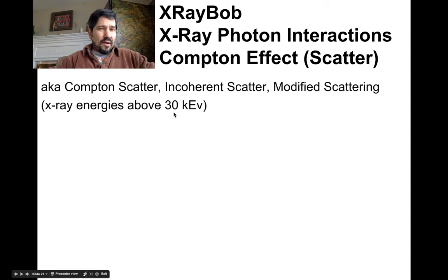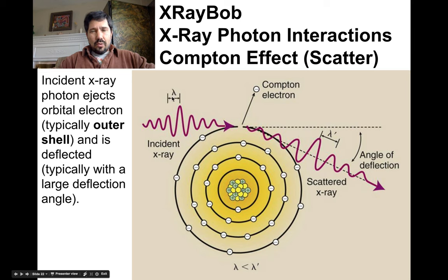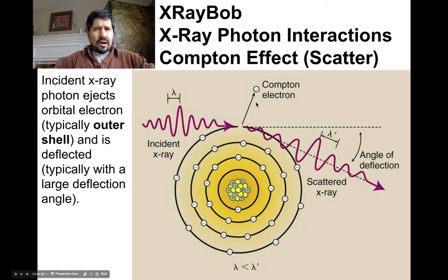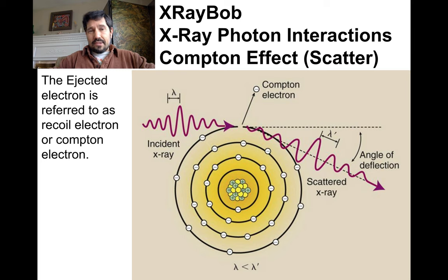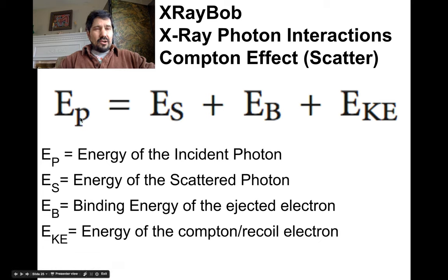These are a little higher energy — above 30 keV. The incident x-ray comes in and ejects an outer shell electron, and it typically has a larger deflection angle than coherent scattering. The wavelength out is larger than the wavelength in because we lose some energy. The electron that we kick out, we call it a Compton electron or a recoil electron. The atom is ionized — we've ripped off an electron, so it's now an ion with a positive charge.